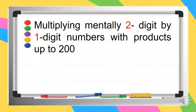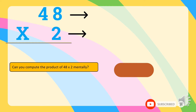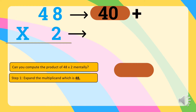Multiplying mentally two-digit by one-digit numbers with products up to 200. Can you compute the product of 48 and 2 mentally? Step one is to expand the multiplicand, which is 48. So let's expand 48: 40 plus 8.